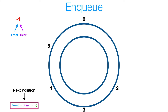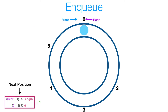So just like a linear queue, my front and rear are going to be set to negative 1 to represent that I have no elements currently in my queue. At the point where I add my very first element to my queue, I'm going to set both my front and rear to index 0, since my front element and my rear element are going to be the same exact element.